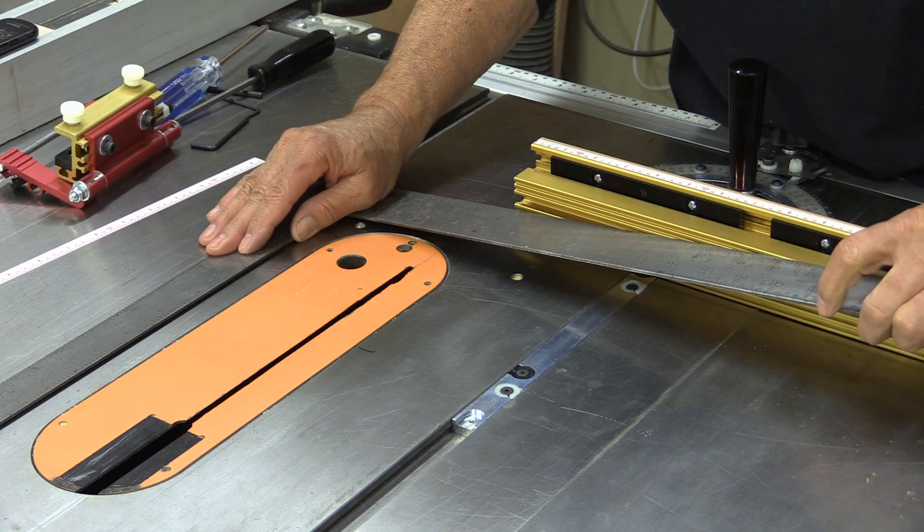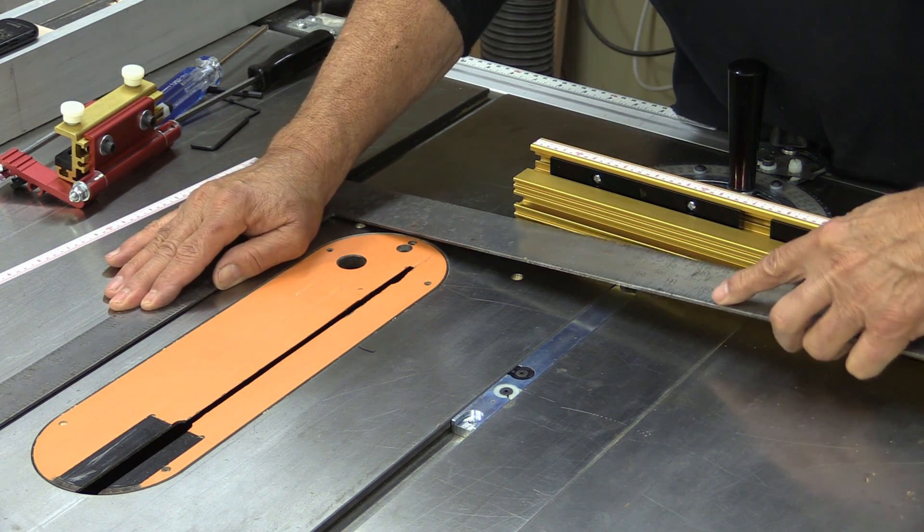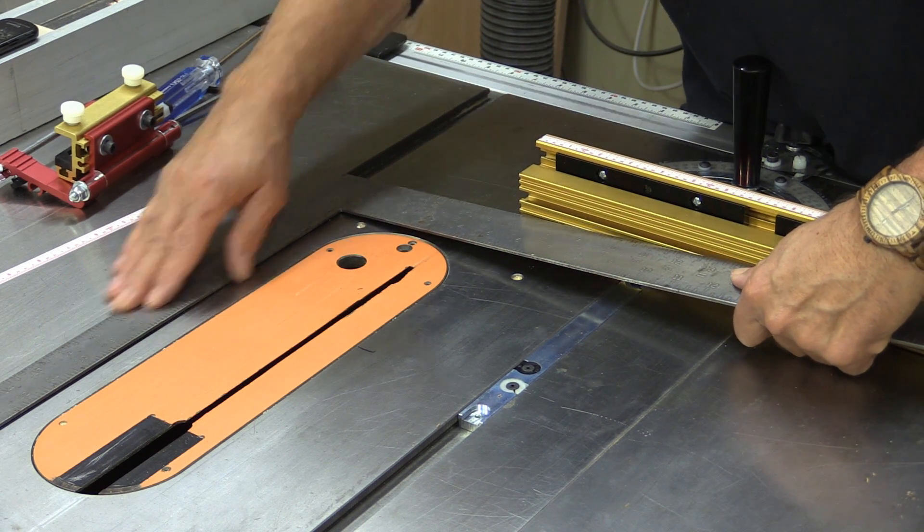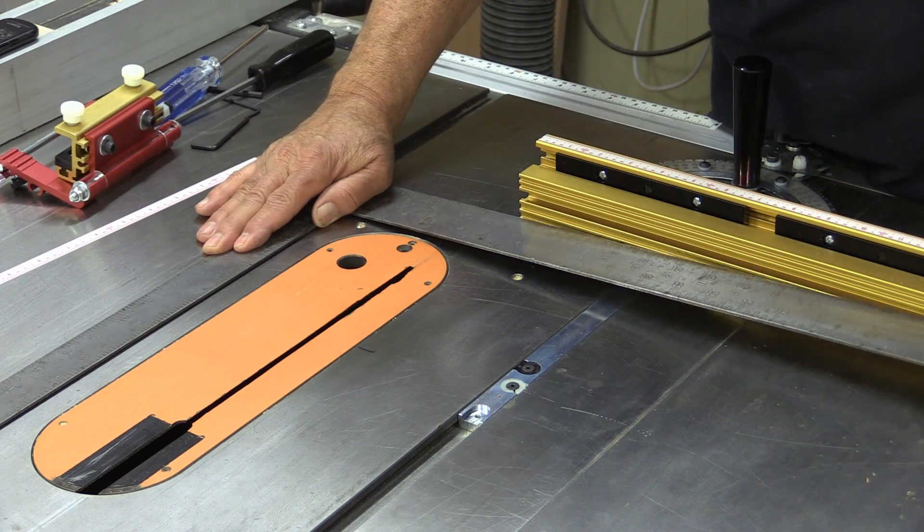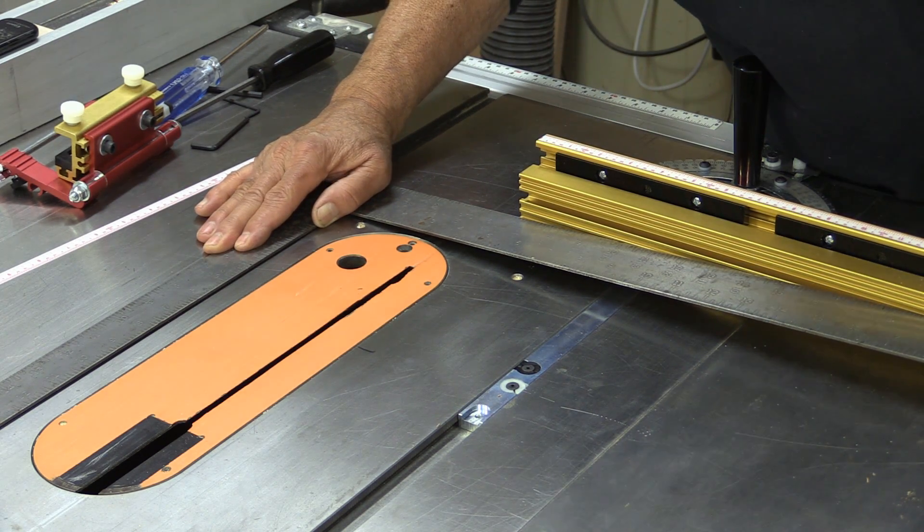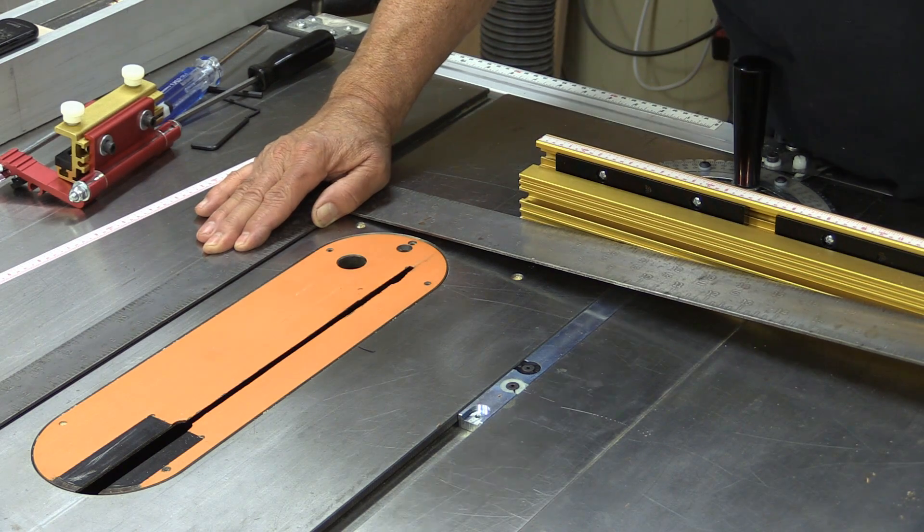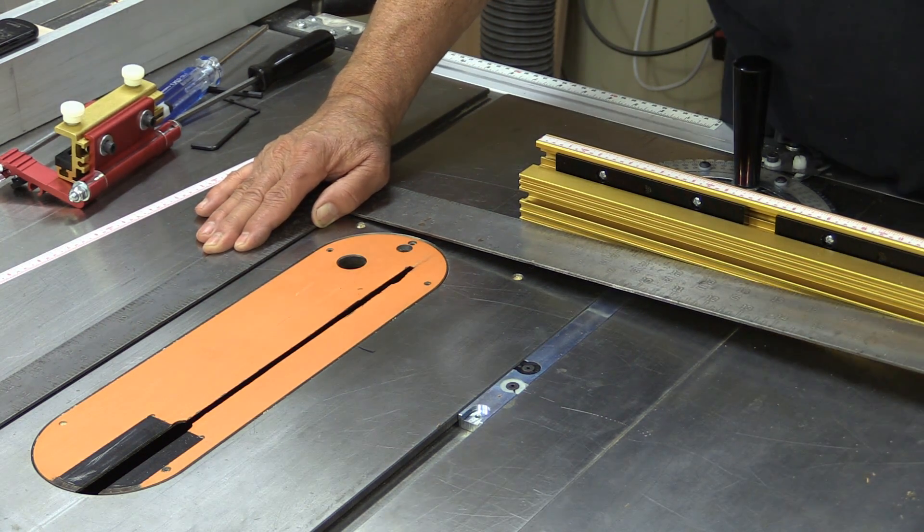So what I'm doing, I'm taking the far miter slot, I'm putting my square at a little bit of an angle, and I can actually feel it scraping. It is in fact set.